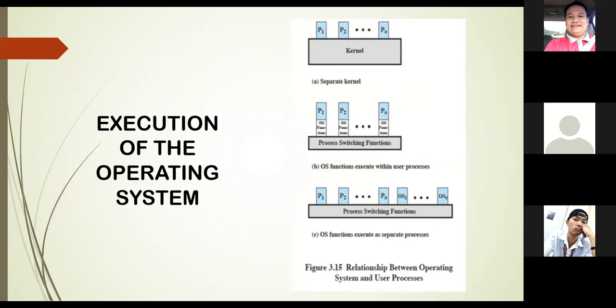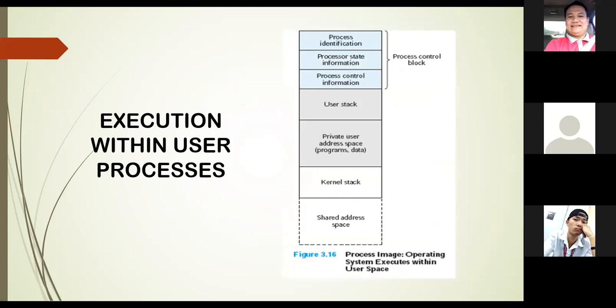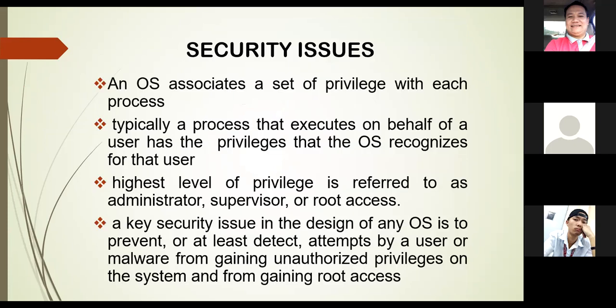Execution of the operating system and execution within user processes. Security issues: an OS associates a set of privileges with each process. Typically, a process that executes on behalf of a user has the privileges that the OS recognizes for that user. The highest level of privilege is referred to as administrator, supervisor, or root access. A key security issue in the design of any OS is preventing or at least detecting attempts by a user or malware from gaining unauthorized privilege on the system and from gaining root access.